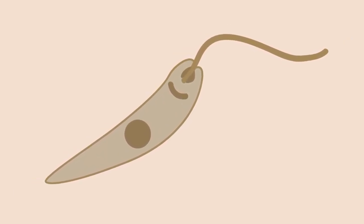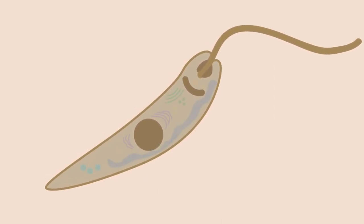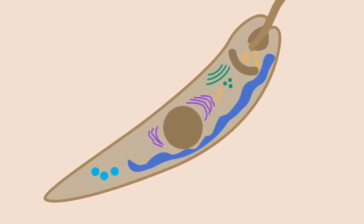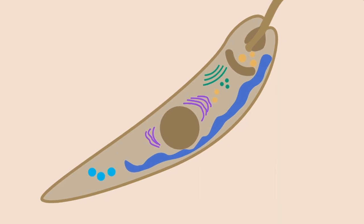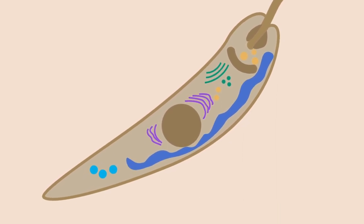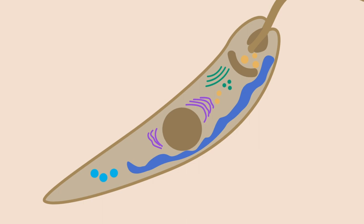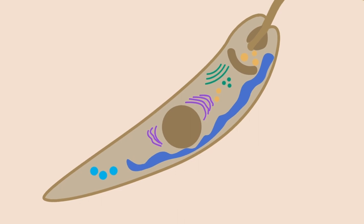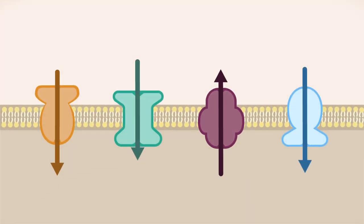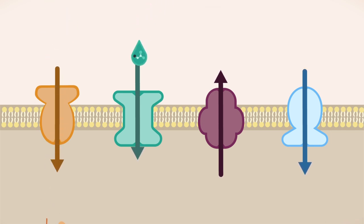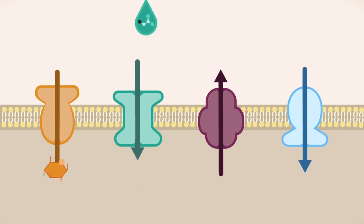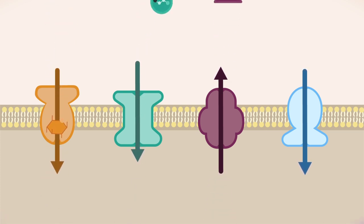New genetic tools have made it much easier to study how different leishmania proteins enable the parasite to survive in the host cell. This project looks at an important group of proteins called membrane transporters. Transporter proteins control the passage of molecules in and out of the cell and between cellular compartments. The parasite needs transporters to take up carbohydrates, amino acids and other nutrients for its survival. It also uses transporters to get rid of toxic substances.